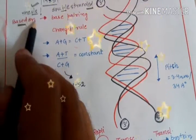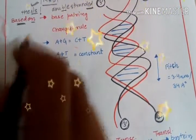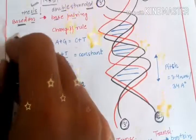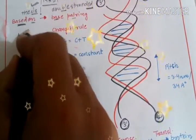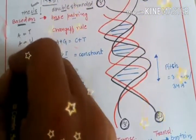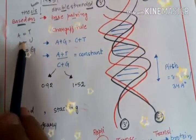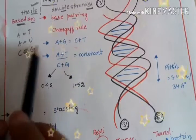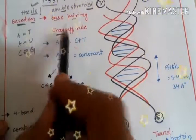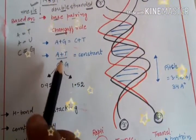These observations are based on two phenomena: base pairing, since A is pairing with T, A is pairing with U, C is pairing with G, making 2 hydrogen bonds, 2 hydrogen bonds, and 3 hydrogen bonds. And the observations are also based on Chargaff's rule. So what does Chargaff's rule say?